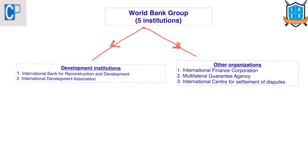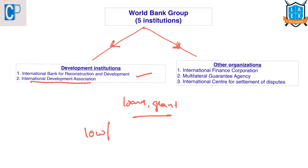The World Bank Group consists of five institutions. Two are development institutions: the International Bank for Reconstruction and Development (IBRD), which provides loans, credits, and grants; and the International Development Association (IDA), which provides low or zero-interest loans to low-income countries. Together, IBRD and IDA are known as the World Bank, while all five institutions together are known as the World Bank Group.